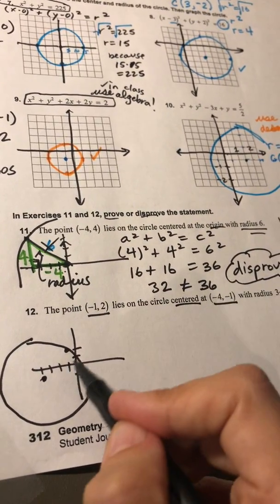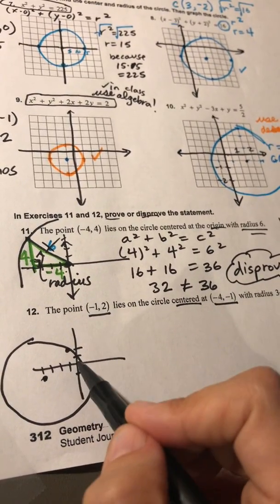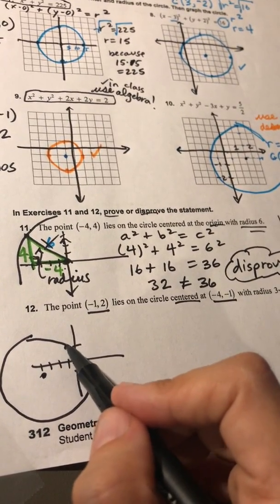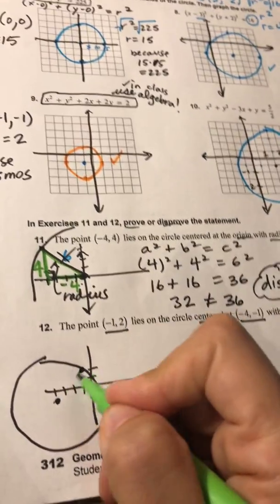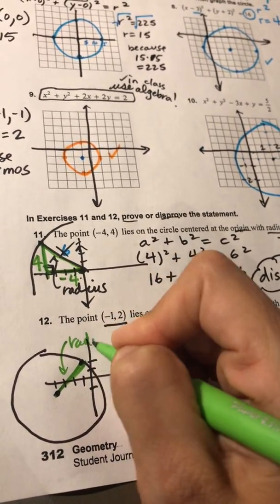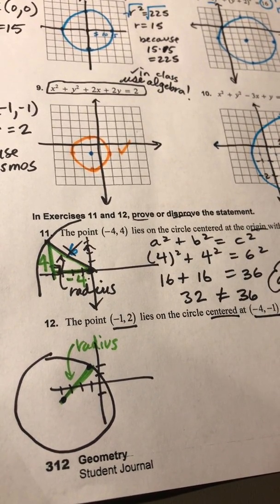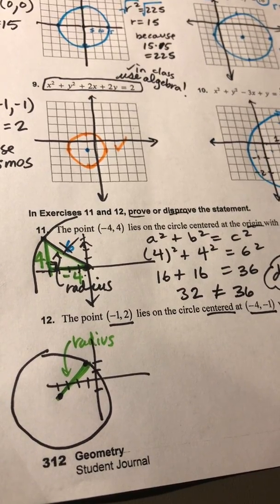The center is at negative 4, negative 1. And a point on the circle is negative 1, positive 2. They've just told me about this radius again. That's my radius. And they're claiming that the radius here is 3 times the square root of 2.